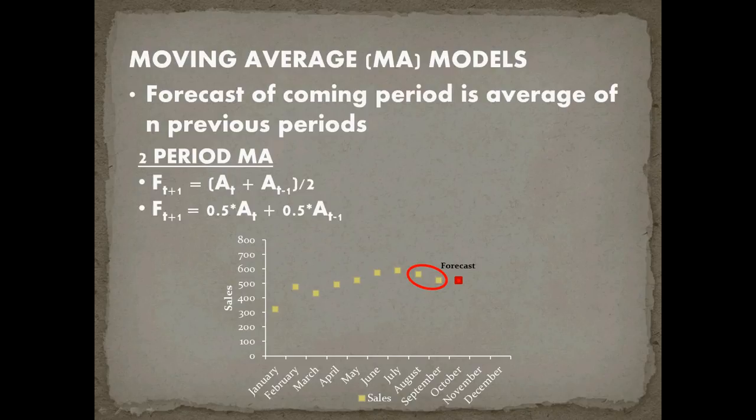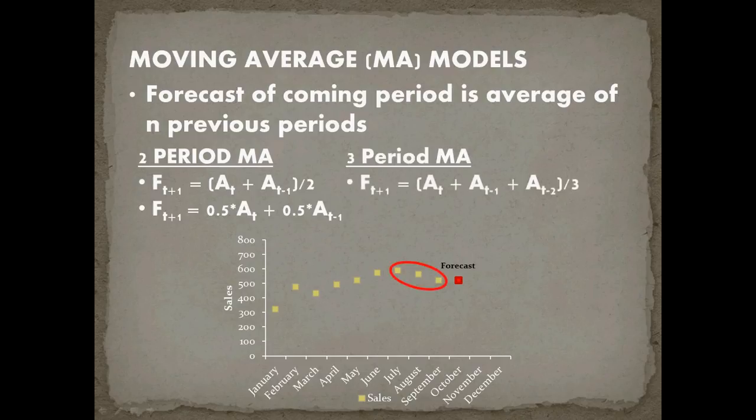How does this change if I would like to use a three-period moving average model? In that case, my forecast is going to be based on July, August, and September, averaging those months. This is again the same as weighting, except this time my weights would each be a third.